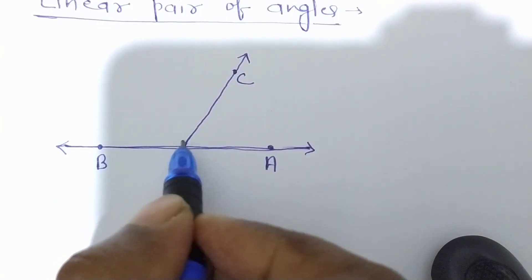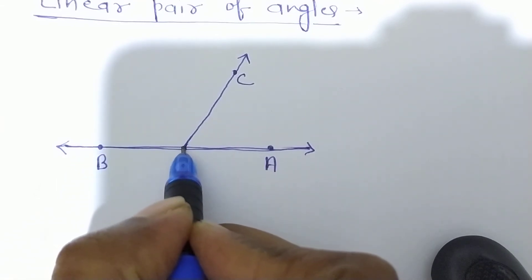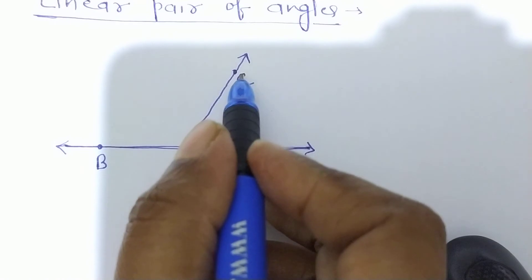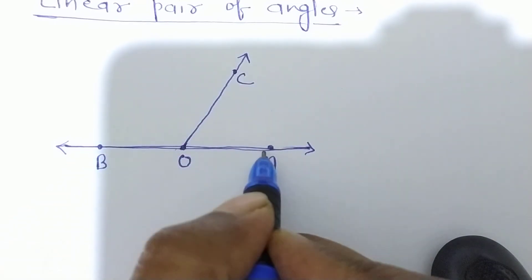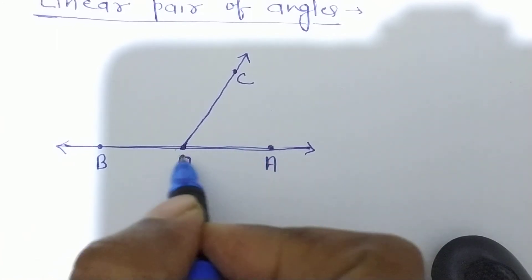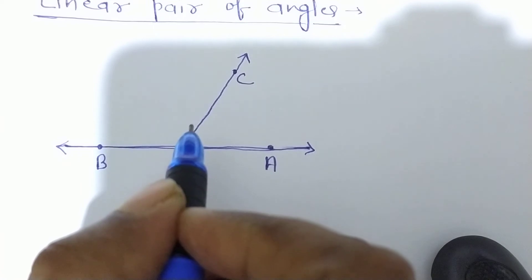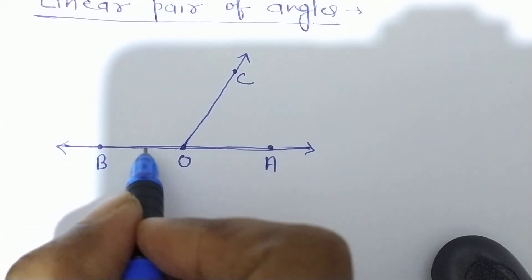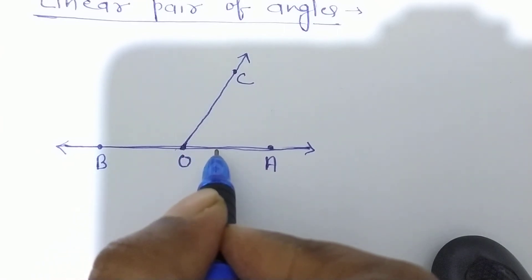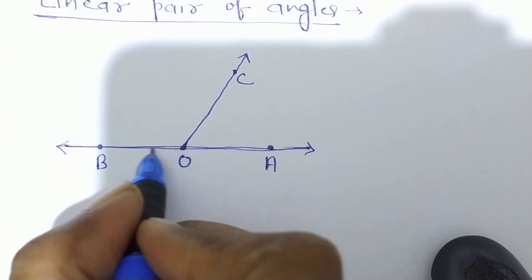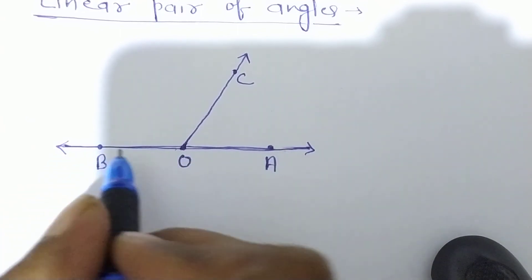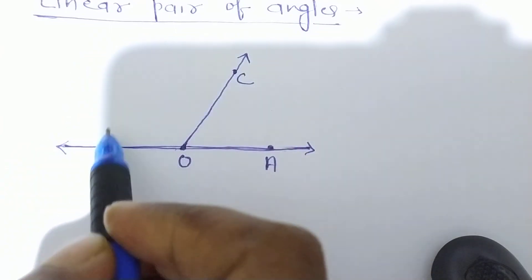Now two angles are being formed here. These are also adjacent angles because they have a common vertex O. Angles BOC and AOC have common vertex O, one common arm OC, and two uncommon arms OB and OA on the opposite sides of the common arm OC. So both angles BOC and AOC are adjacent angles. But two adjacent angles are said to form a linear pair of angles if their non-common arms are two opposite rays. Here, the non-common arms OA and OB are opposite rays — that is why these two angles are called a linear pair of angles.